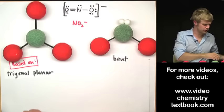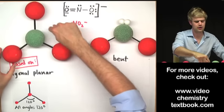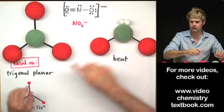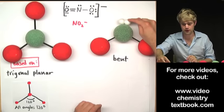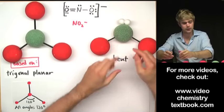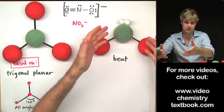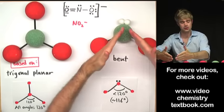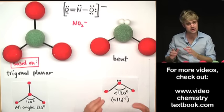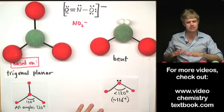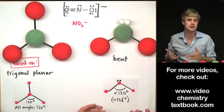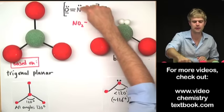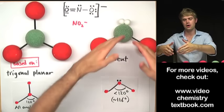In a trigonal planar molecule, there is a 120-degree angle between all bonds. In the bent molecule though, the unshared electron pair pushes the atoms harder than another atom would because lone pairs need extra space. So in the bent molecule the atoms are a little closer together — the angle is less than 120 degrees, more like about 116 degrees. That's a bent molecule: two bonds and one lone electron pair around a central atom.